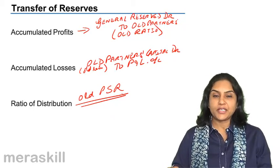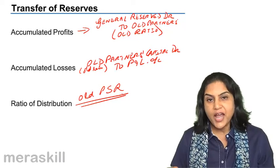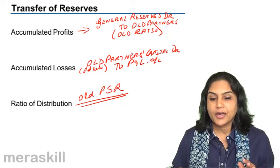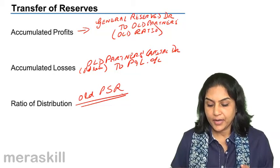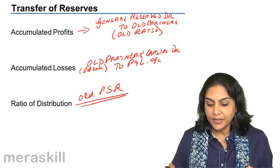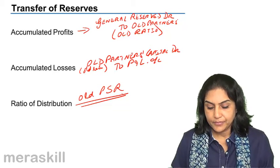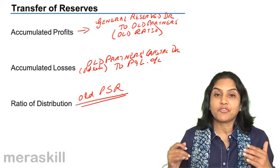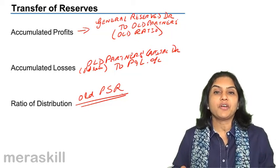So any accumulated profits or losses have to be transferred to the old partners in the old profit sharing ratio, in case of any change in the profit sharing ratio, in case of reconstitution of a firm.